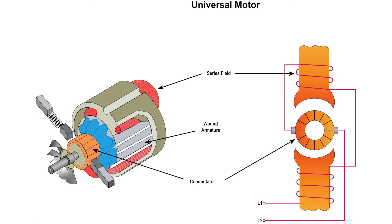These motors are constructed like a series type DC motor with a wound series field on the stator and a wound armature on the rotor. The field windings on this motor are connected in series with the armature windings.